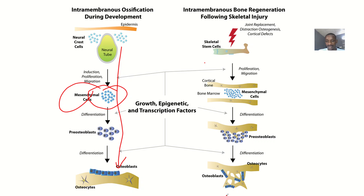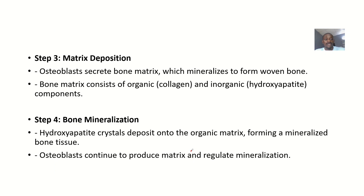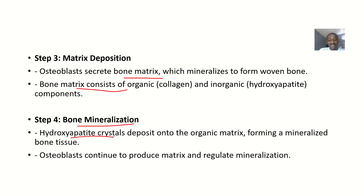Step three is matrix deposition. Osteoblasts secrete bone matrix, which mineralizes to form woven bone. The bone matrix consists of organic components — collagen — and inorganic components — hydroxyapatite. Step four is bone mineralization, where hydroxyapatite crystals deposit onto the organic matrix, forming a mineralized bone tissue, as osteoblasts continue to produce matrix and regulate mineralization.